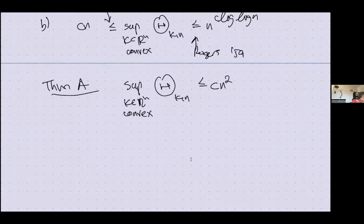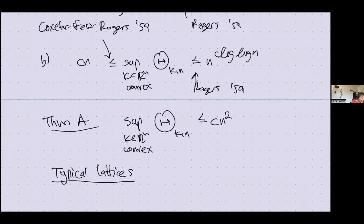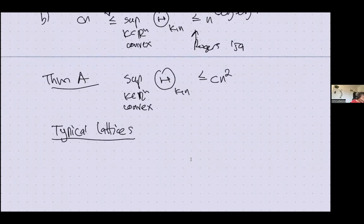The next set of results are for typical lattices. What Theorem A says is that if you give me any convex body, I can find a lattice for which it covers with average covering number bounded by N squared. But I won't be able to produce that lattice explicitly — instead, I can say that with respect to some probability measure on the space of lattices, a typical lattice will behave this way.